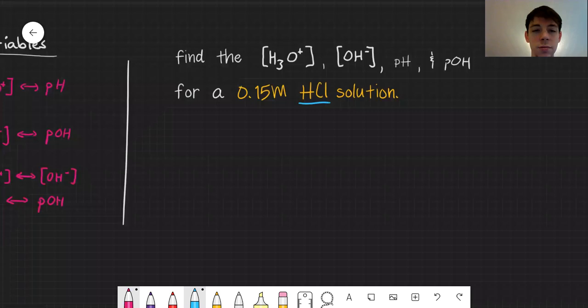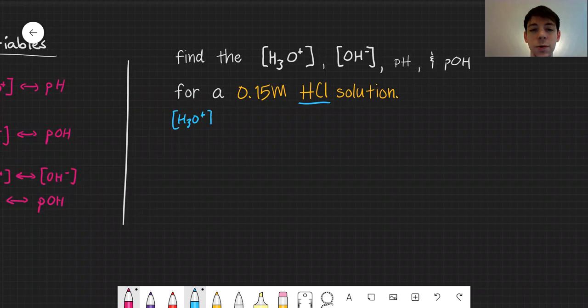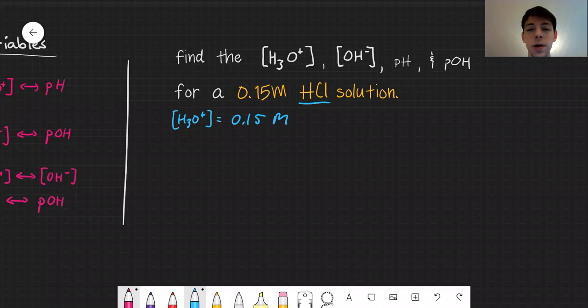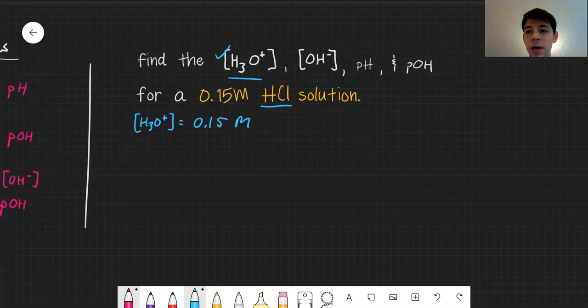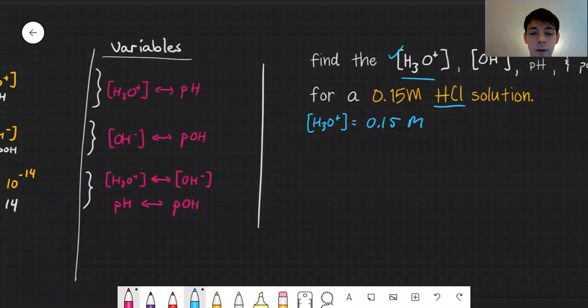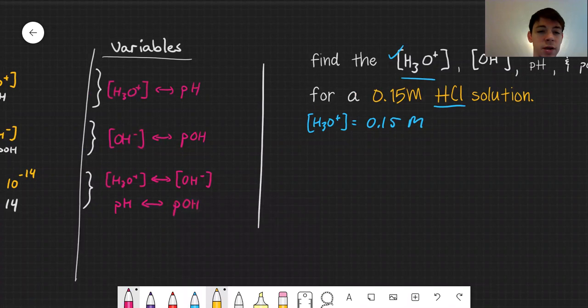Concentration of hydronium is equal to the concentration of the acid. That's what we're given in this problem. Let's look at what we need to find. We want to find hydroxide, pH, and pOH. We want to use an equation that has hydronium in it. I see I could use this equation to solve for hydroxide, or I could use this top equation to solve for pH. Let's do the top one first.